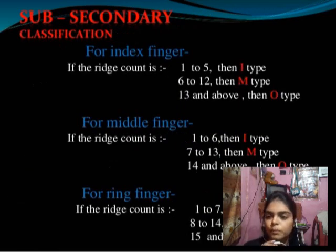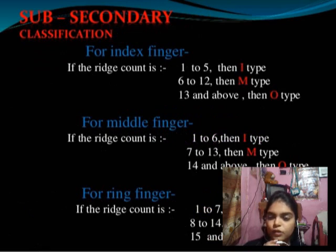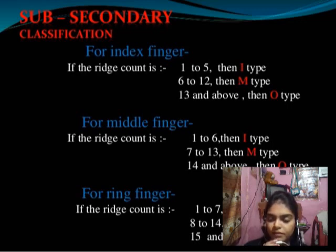If the loop pattern is present on the index finger, then we count the ridges: 1 to 5 is inner, 6 to 12 is middle, and 13 and above is outer. For the middle finger: 1 to 6 is inner, 7 to 13 is middle, and 14 and above is outer.